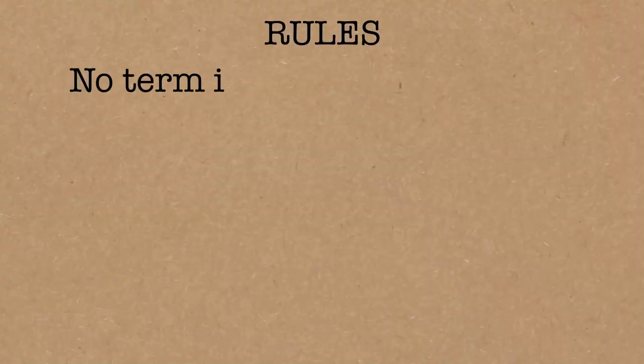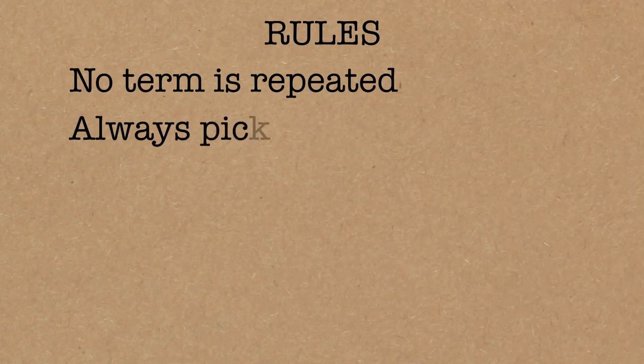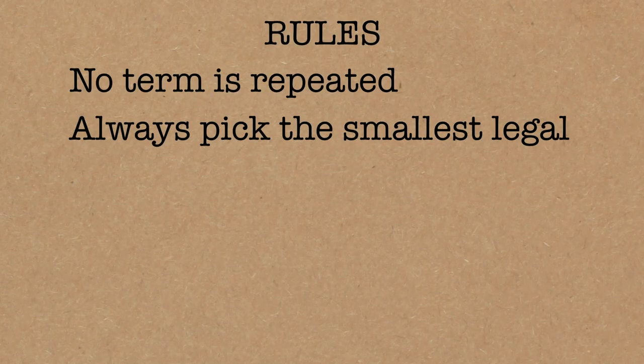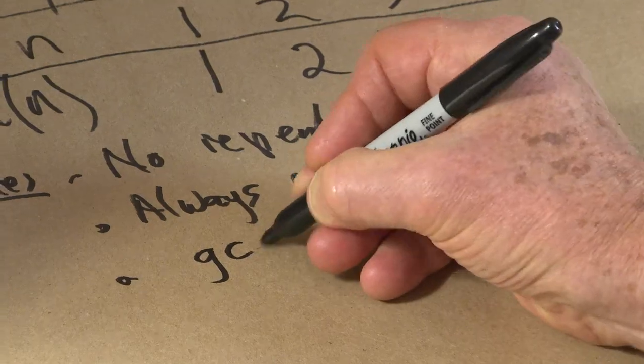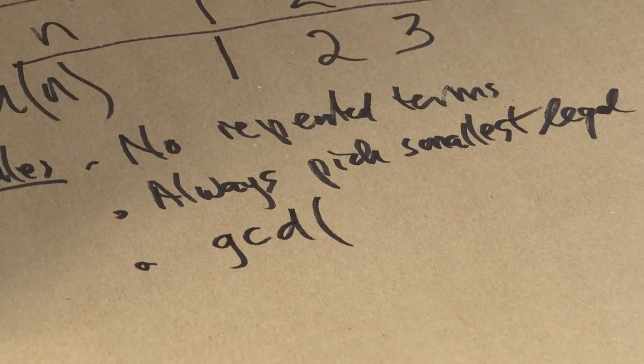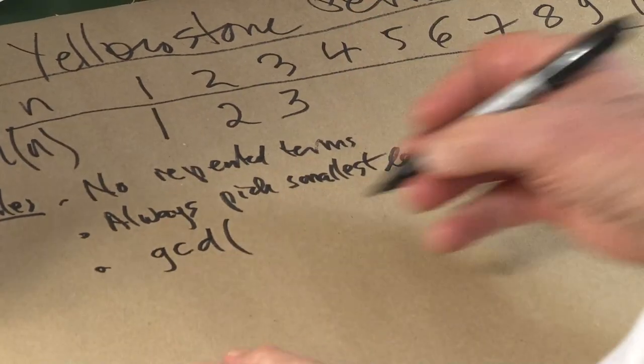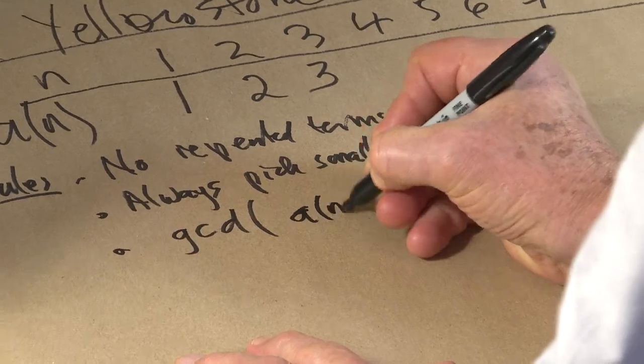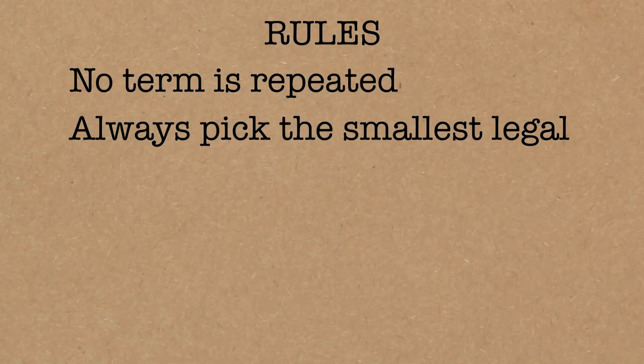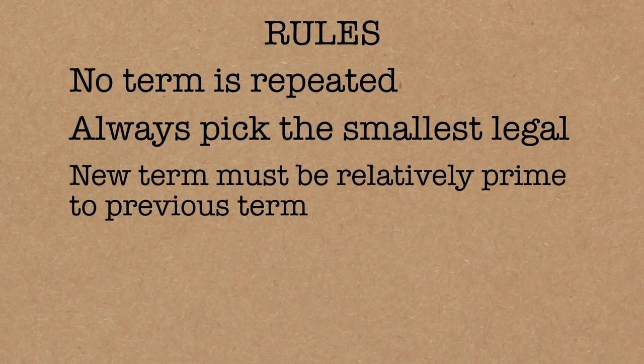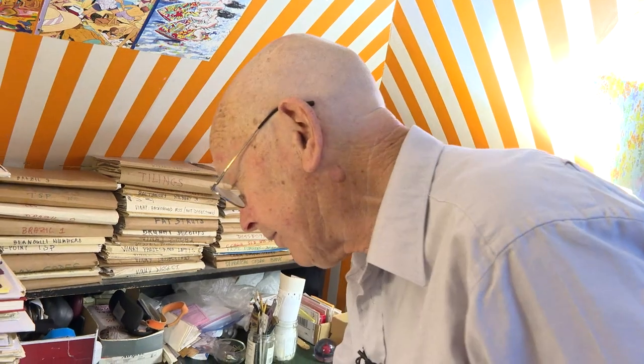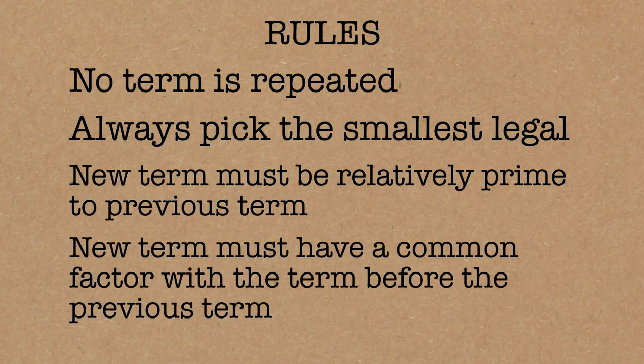Rules are very simple. No term is repeated. Always pick the smallest legal number. The next rule says that the GCD, the greatest common divisor of the term you're putting down, a of n, and the previous term has to be 1. In other words, the new number has to be relatively prime to the previous term, but it must have a common factor with the term 2 back. Let's do it.